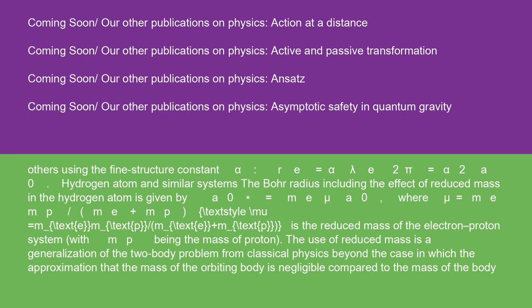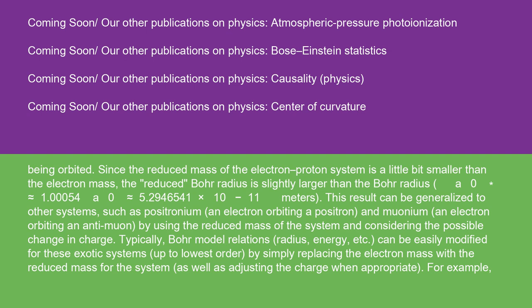The use of reduced mass is a generalization of the two-body problem from classical physics beyond the case in which the approximation that the mass of the orbiting body is negligible compared to the mass of the body being orbited. Since the reduced mass of the electron-proton system is a little bit smaller than the electron mass, the reduced Bohr radius is slightly larger than the Bohr radius: a₀* ≈ 1.0005 a₀ ≈ 5.2946541 × 10⁻¹¹ meters.